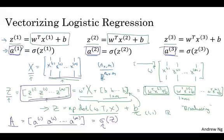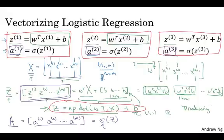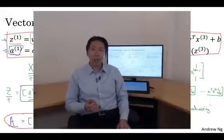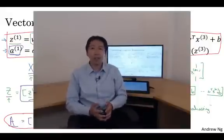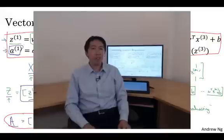So, just to recap, what we've seen on this slide is that instead of needing to loop over m training examples to compute lowercase z and lowercase a one at a time, you can implement this one line of code to compute all the z's at the same time. And then, this one line of code with appropriate implementation of lowercase sigma to compute all the lowercase a's all at the same time. So, this is how you implement a vectorized implementation of the forward propagation for all m training examples at the same time. So, to summarize, you've just seen how you can use vectorization to very efficiently compute all the activations, all the lowercase a's sort of at the same time. Next, it turns out you can also use vectorization to very efficiently compute the backward propagation to compute the gradients. Let's see how you can do that in the next video.